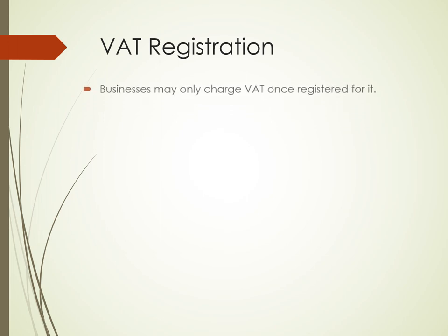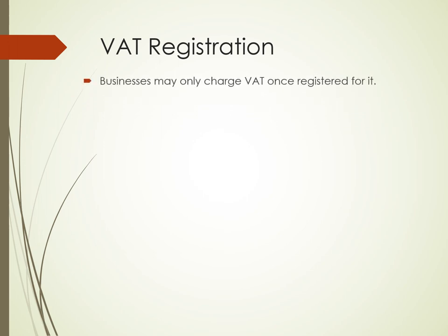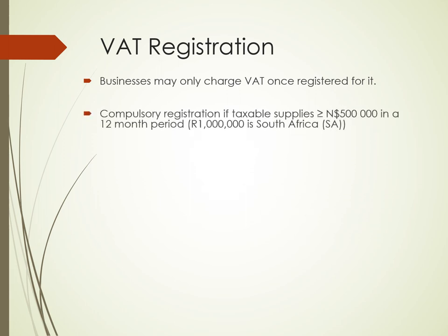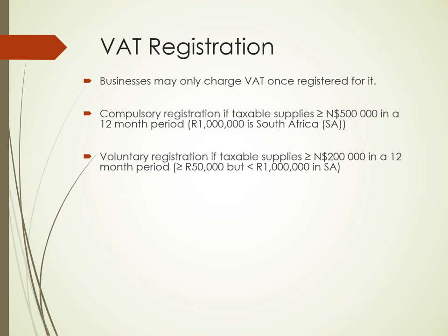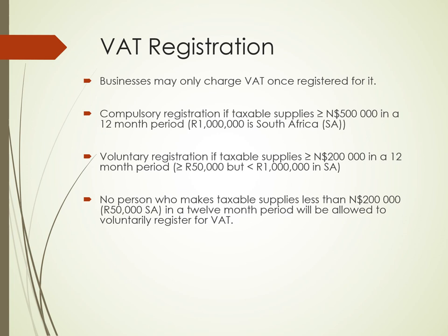VAT Registration. Businesses may only charge VAT once they are registered for it. It is compulsory for a business to register for VAT if their taxable supplies are greater than $500,000 in a 12-month period in Namibia, while the value of their taxable supplies has to be greater than $1 million in South Africa. Businesses can also voluntarily register for VAT if their taxable supplies are greater than $200,000 in a 12-month period in Namibia, while in South Africa the value has to be greater than $50,000 but less than $1 million. In effect, no person who makes taxable supplies less than $200,000 in a 12-month period will be allowed to register for VAT in Namibia, while in South Africa no person who makes taxable supplies less than $50,000 will be registered for VAT.